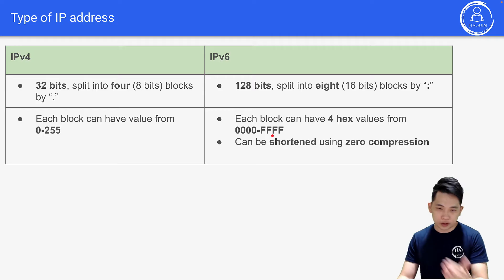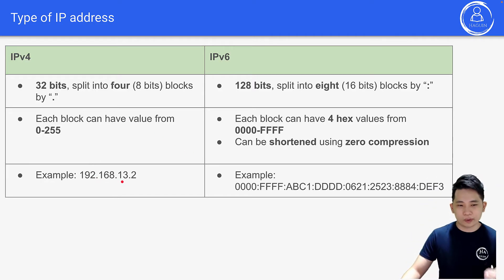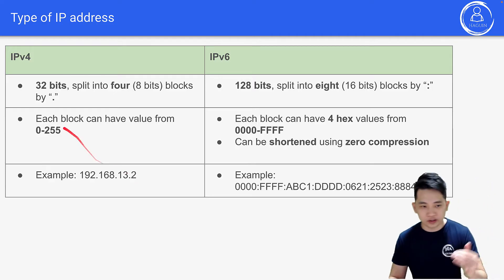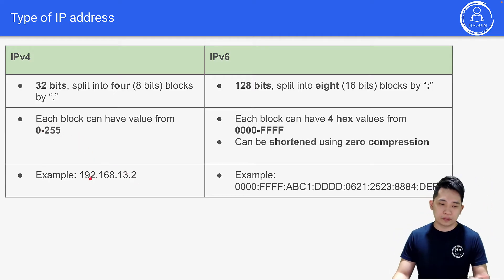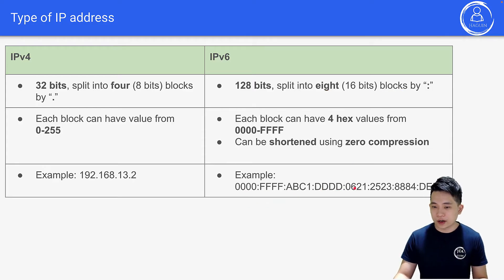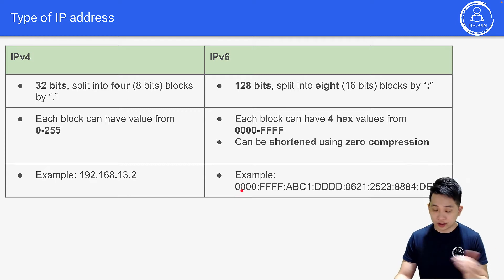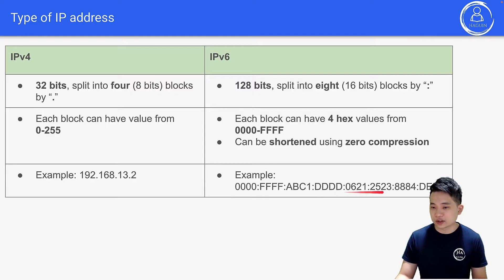For IPv4, an example is 192.168.13.2 — values range from 0 to 255, split by dots into four blocks. For IPv6, there are eight blocks split by colons. The values are not decimal — they are hexadecimal, ranging from 0000 to FFFF. These are examples of IPv4 and IPv6 addresses.